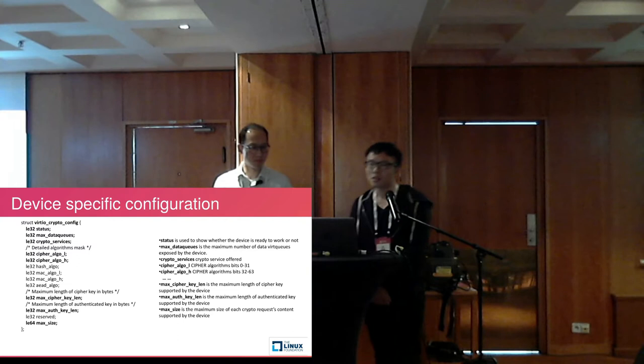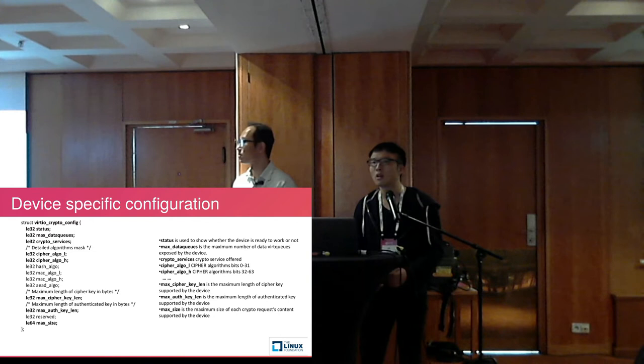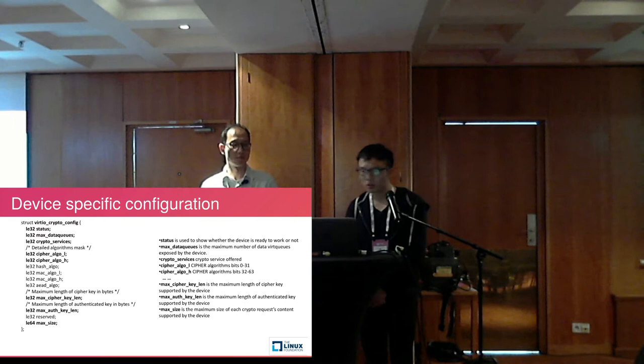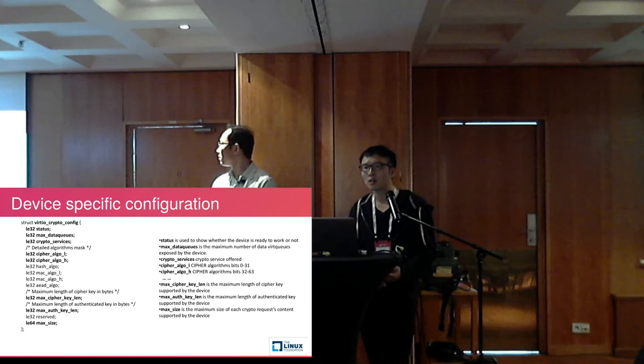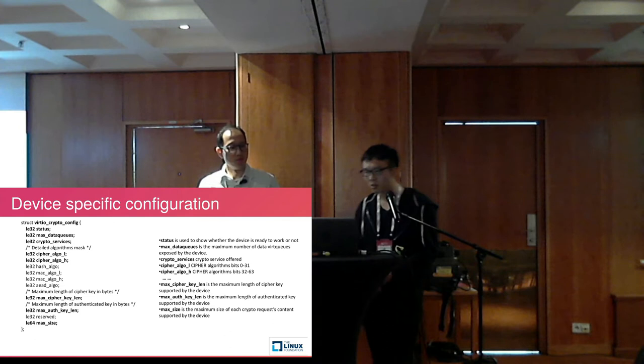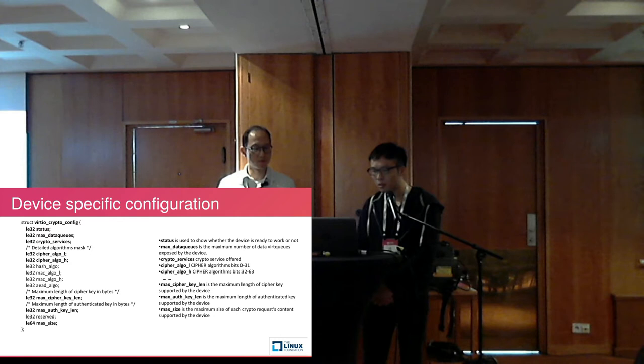This is the detail information of the specific configuration. There are several fields to support the virtio crypto device. The status field shows whether the device is ready to work or not. The crypto services field expresses the crypto services supported by the device. The detailed algorithm mask bits show the supported algorithms, and other fields include mask cipher key lengths and mask authenticated key lengths.